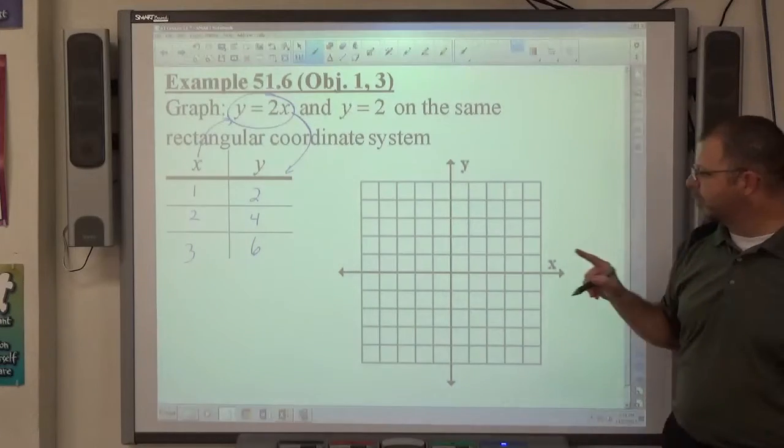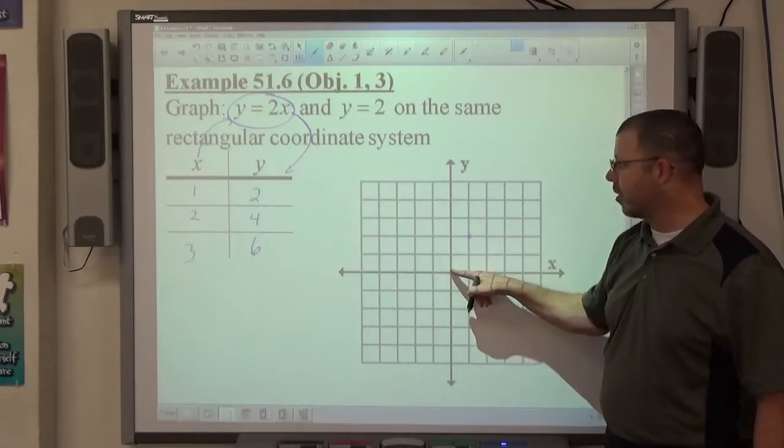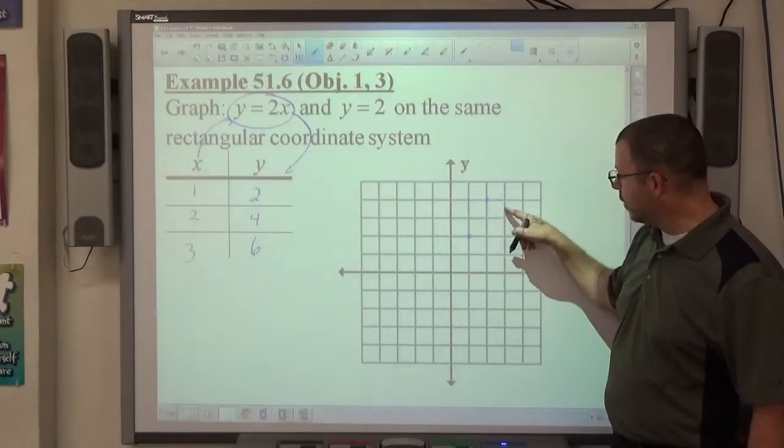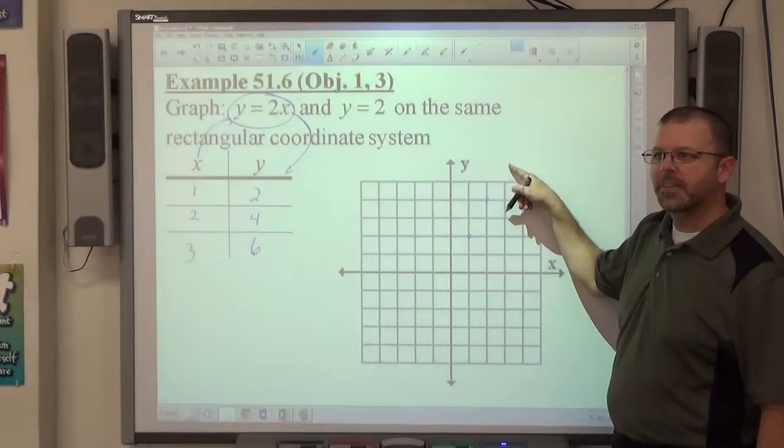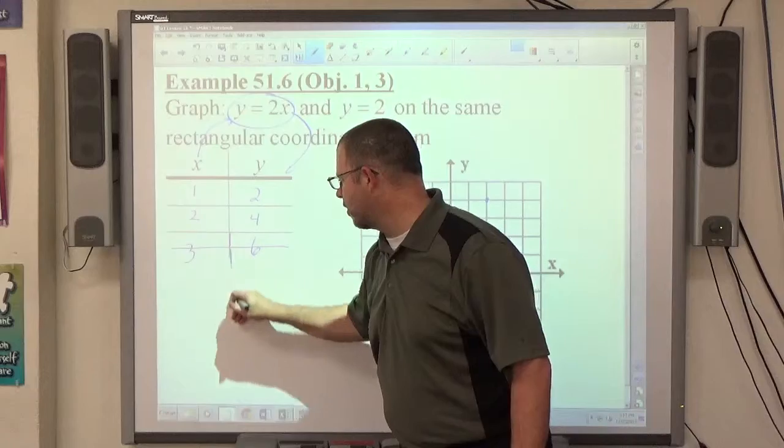If I plot all three of these points, one right, two up, starting from the origin every time, two right, four up. Starting from the origin, one, two, three right, one, two, three, four, five, six up, it doesn't fit, right? When that happens, strike that out and go the other way.